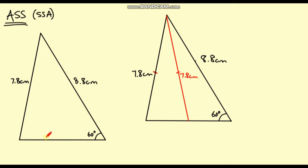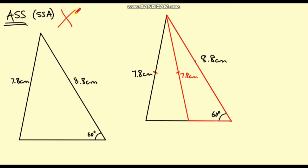This base length — it didn't matter what this length was, we weren't told what this length was. As long as we've got a 60 degree angle, an 8.8 centimetre line, and a 7.8 centimetre line, instead of going to the left we can go to the right. This triangle outlined in red — we can clearly see that they are not congruent, they are completely different, but they do have the same dimensions. So the ASS combination is not a congruency axiom.